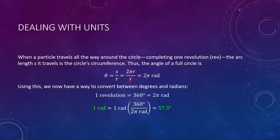Knowing this allows us to make a unit conversion between radians and degrees. One radian can be converted to degrees by taking the ratio of 360 degrees to 2π radians. The radian units cancel out, so you take 1 times 360 divided by 2π, and you end up with 57.3 degrees. By definition, a radian is 57.3 degrees. I provide this conversion factor on my formula sheet, but it's fascinating to see where it comes from.